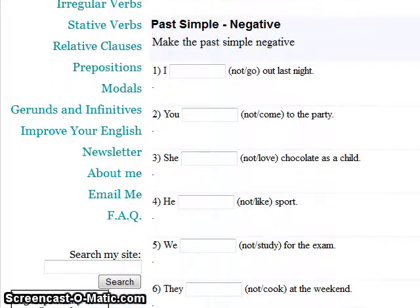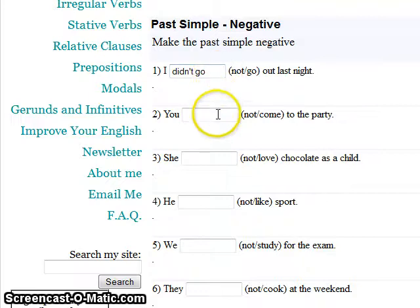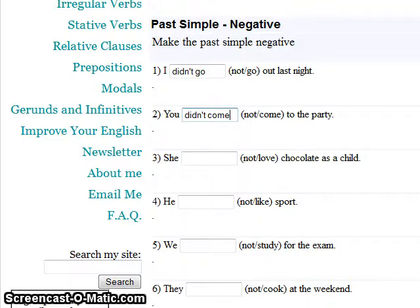In the negative, you can't say 'she didn't went' — that's wrong. It should be 'she didn't go.' Similarly, 'you didn't come' — not 'didn't came.' And 'she didn't look' — not 'didn't looked.' Remember: after 'didn't,' use the base form of the verb.